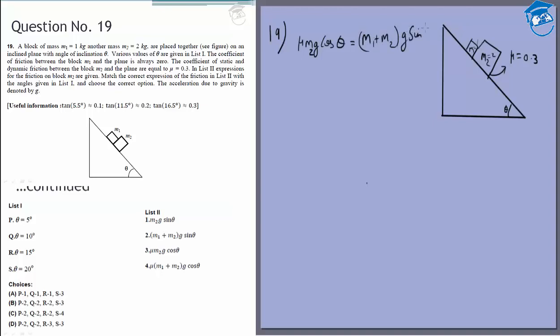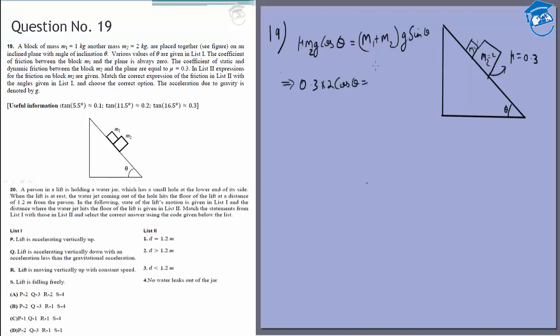This means 0.3 × 2 cos θ equals 3 sin θ, which gives tan θ equals 0.2, so θ equals 11.5 degrees. This is the critical angle when slipping starts.